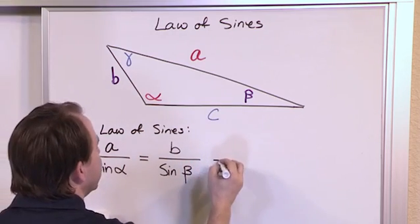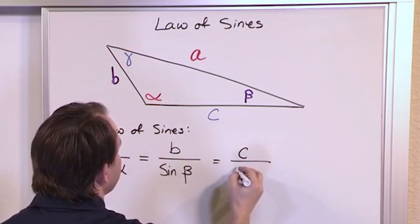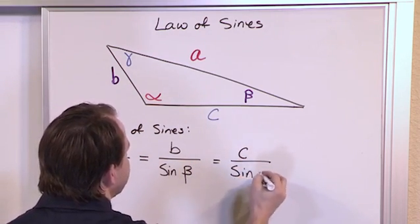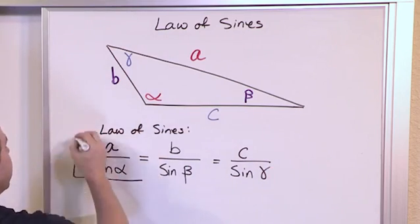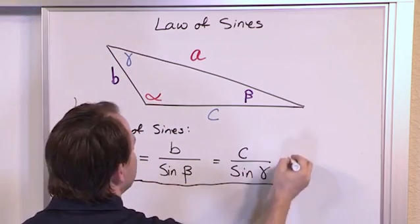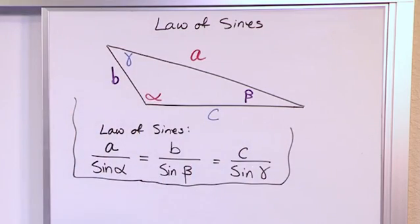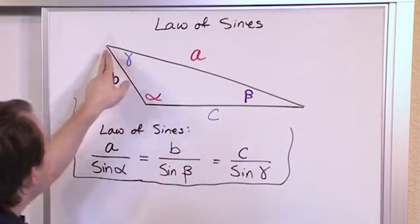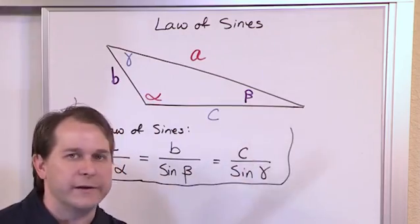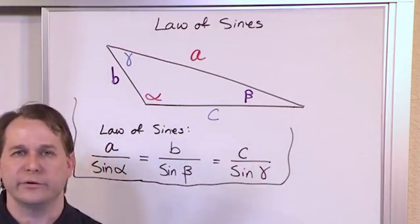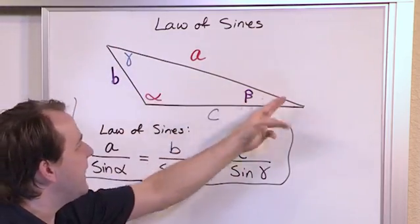But that's also equal to the side c of this triangle divided by the sine of angle gamma. This is the law of sines and that's why I had to draw the triangle. What it's saying is, if I know how long this is like in meters or feet or meters, it doesn't matter what unit you're using. If I know how long side a is in meters, I just...